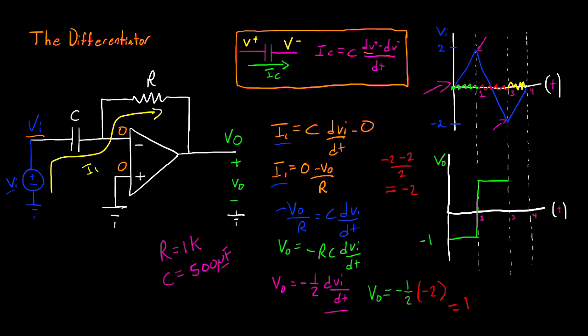Now for this last interval, we go from negative 2 back to 0 over a span of 1. So this is going to be 0 minus minus 2 divided by 1, and this is going to be equal to positive 2. Now if we make this a positive 2 down here, our output voltage becomes negative 1 again, and our graph is going to look like this.